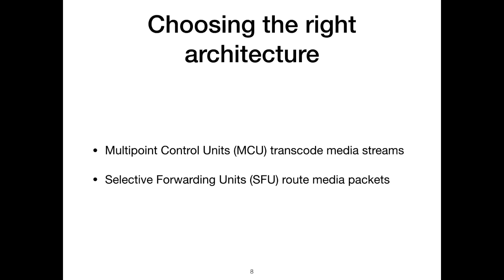A lot of your available options depend on your core architecture for group calls. Video service providers have two main options: multipoint control units (MCUs) or selective forwarding units (SFUs). MCUs take all incoming streams and transcode them into a single video stream sent towards a specific receiver — this is costly and doesn't scale well, though sometimes necessary to support legacy devices. If you're building for the future, you want to avoid an MCU because it's not really scalable.